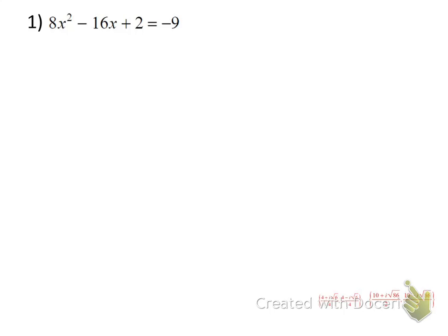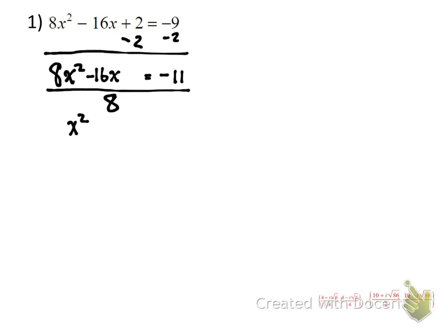Step 1: Move all the constants to the right-hand side, to the opposite side of the variable terms. So subtract 2 from both sides. So we have 8x squared minus 16x is equal to negative 11. That's the first step. Next, A is equal to 8, so we want to divide the whole equation by 8, both sides of the equation by 8. When we do that, we get x squared minus 2x is equal to negative 11 over 8.